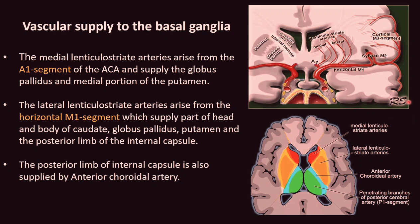Vascular supply to the basal ganglia includes the medial and lateral lenticulostriate arteries. The medial lenticulostriate artery arises from the A1 segment of the anterior cerebral artery and supplies the globus pallidus and medial portion of the putamen. The lateral lenticulostriate artery arises from the M1 segment and supplies part of the head and body of the caudate, globus pallidus, putamen, and posterior limb of the internal capsule, which is also supplied by the anterior choroidal artery. Both thalami are supplied by the posterior cerebral artery.